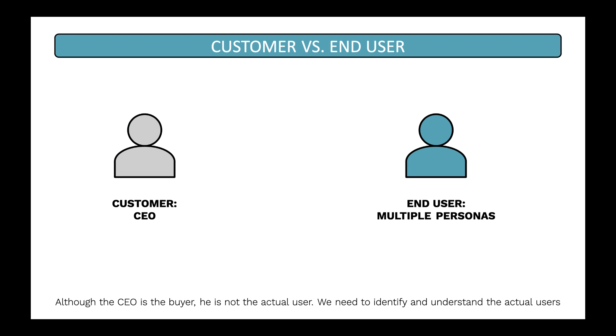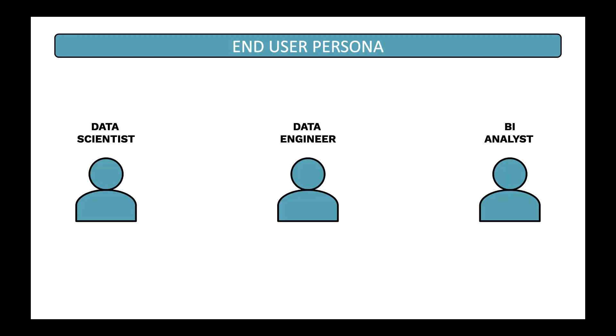Upon further investigation and observing the workflow of how reports get generated for the CEO, it became evident that there are other users. We found out that there are three types of different end users that actually use this system and build reports for the CEO. So this is a case where the end user is different from our customer. Our customer is the CEO who wants to make the purchase, but there are actually three different end user segments.